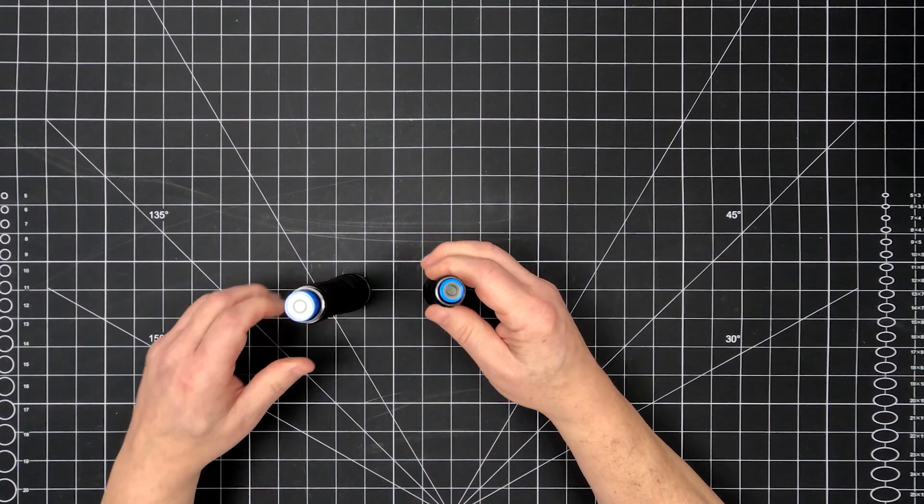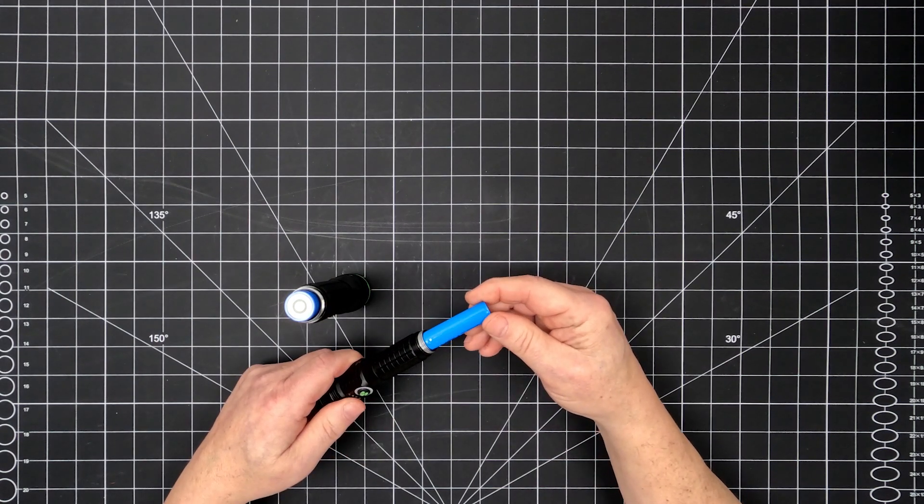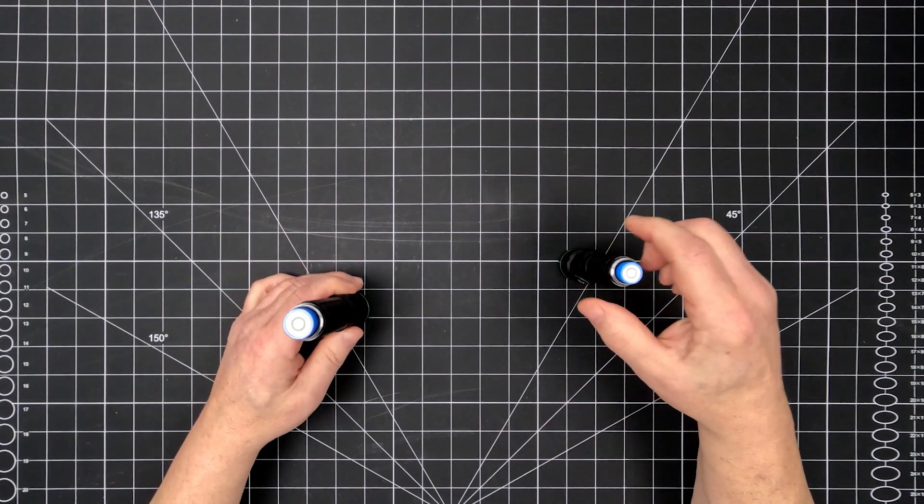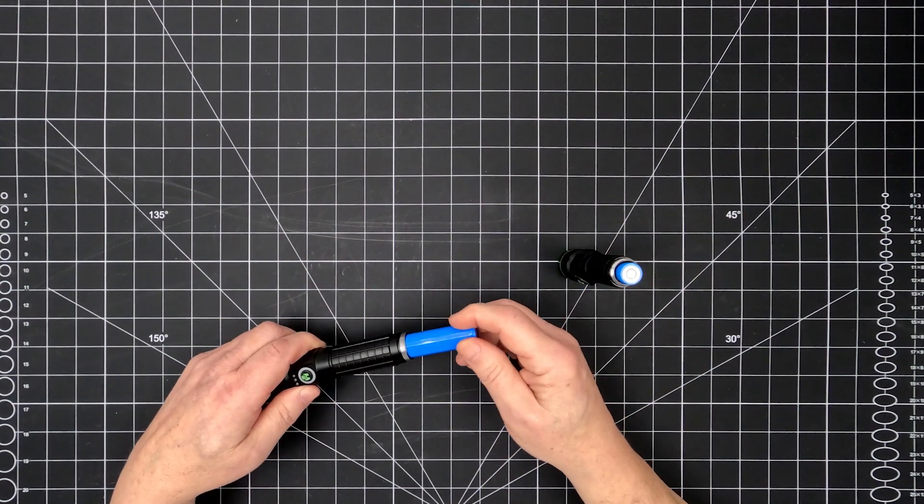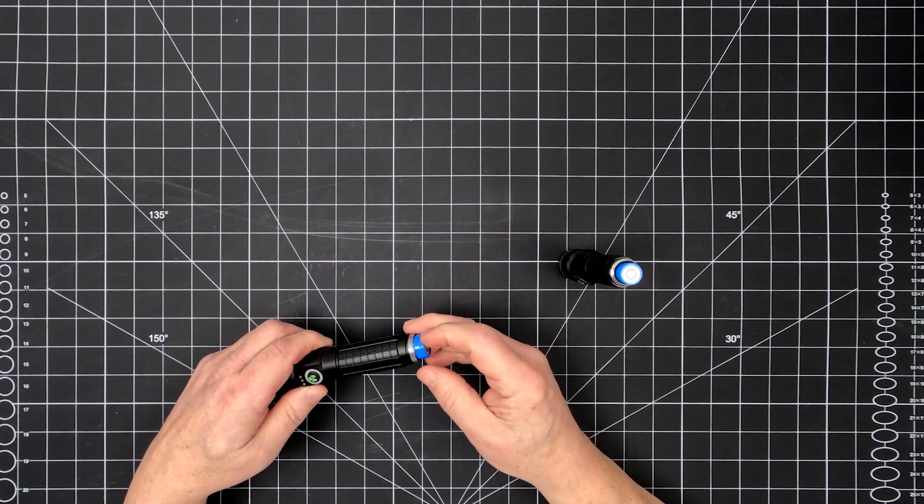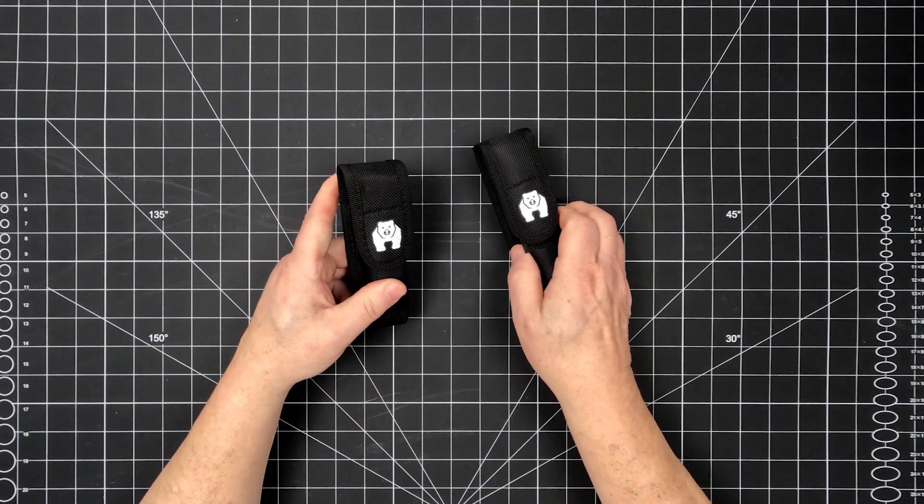Unscrewing the magnetic charging port provides access to the battery compartment. The 1K is powered by an 800 milliamp hour 3.7 volt lithium ion battery, while the 2K is powered by a 2,000 milliamp hour 3.7 volt battery. Remove the battery if you won't be using your flashlight for an extended period.